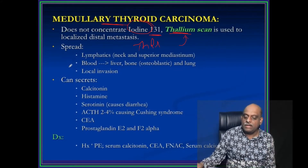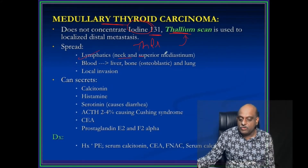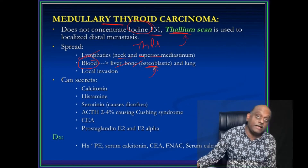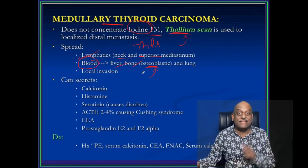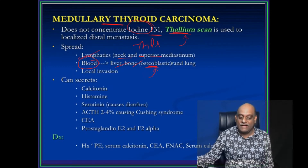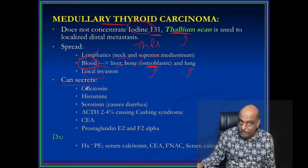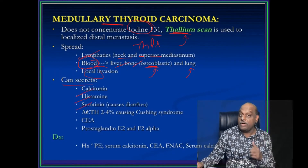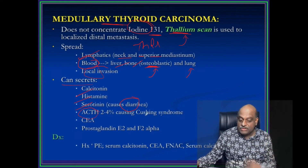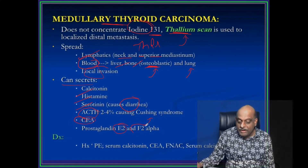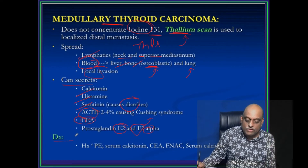Medullary thyroid carcinoma can spread via lymphatics to the neck and superior mediastinum. Via blood it can go to liver, bone — where it leads to osteoblastic metastasis, just like prostate carcinoma — and to lung. It can also lead to local invasion. Medullary carcinoma of thyroid secretes calcitonin, histamine, and serotonin — hence there can be diarrhea. It can also secrete ACTH, leading to Cushing syndrome, carcinoembryonic antigen, and prostaglandins E2 and F2-alpha.